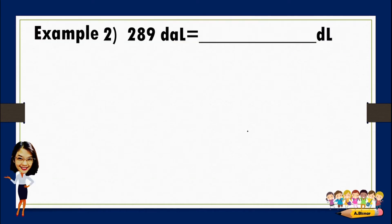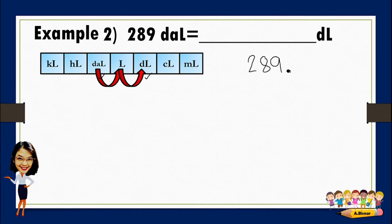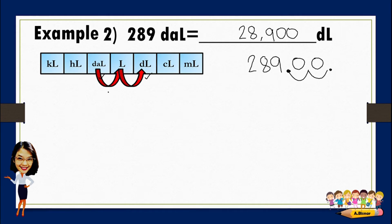Let us try to convert 289 decalitres to deciliters. Using the converter diagram, we write the given: 289. This is a whole number, so the decimal point is at the right side of the last digit. Counting from decaliter to deciliter: one, two — there are two movements to the right. We move the decimal point two times and add two zeros. So 289 decaliters is equivalent to 28,900 deciliters.